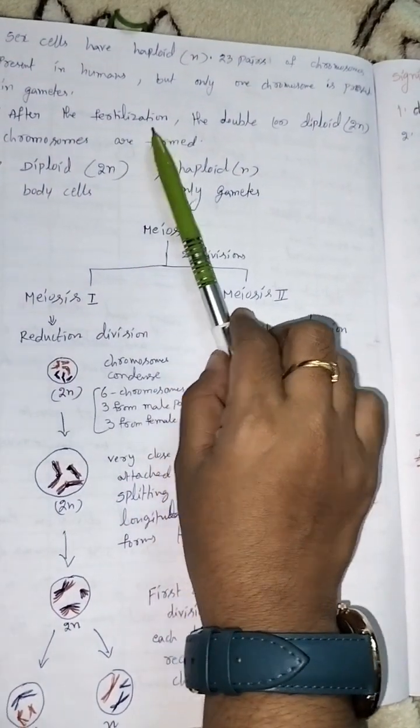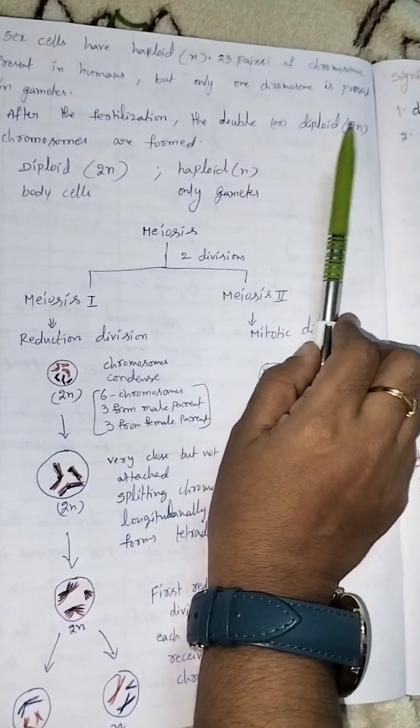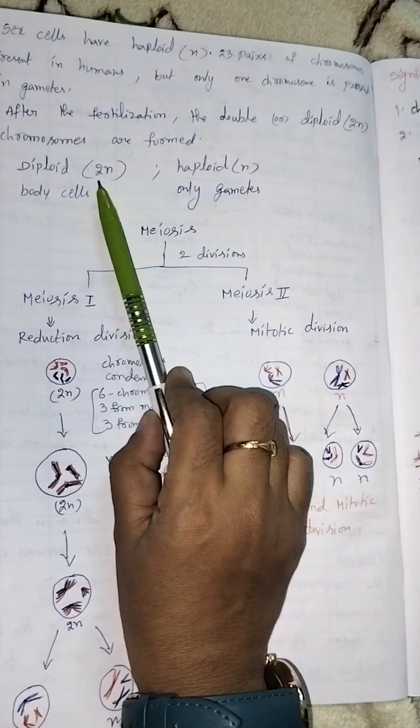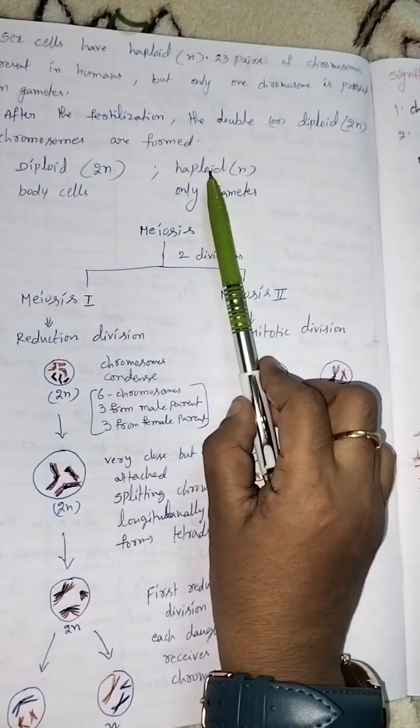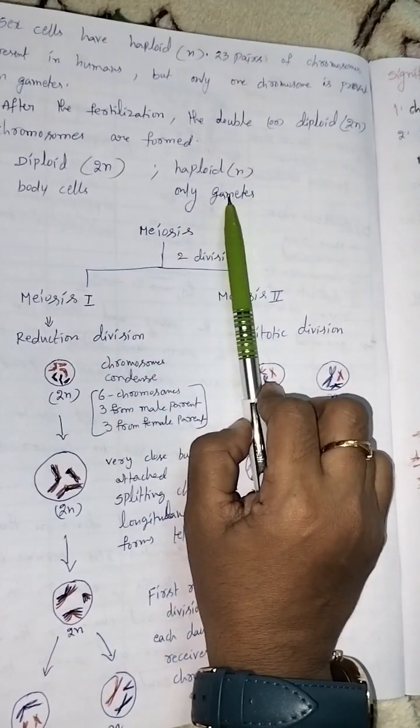After fertilization, diploid 2N chromosomes are formed. Diploid means 2N, present in body cells or somatic cells. Haploid means N, a single set of chromosomes only in the gametes.